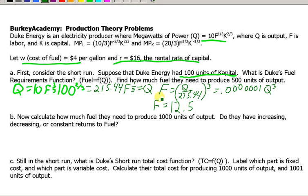Okay, so if you solve this function for f, you get f equals q over 215.44 cubed to get rid of the one-third power. And that gives you this as your fuel requirements function. And then you can plug in any quantity, say this 500 here asked about in the question, and then you get the answer that you would need 12.5 units of fuel to get 500 units of output.